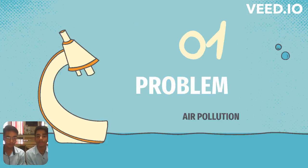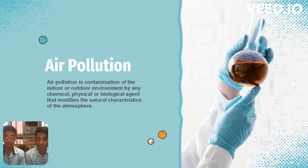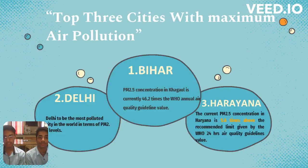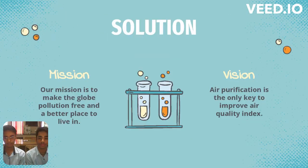As my partner already told you about the societal problem, air pollution nowadays has become a major concern. Air pollution is the contamination of indoor and outdoor environments by a chemical, physical, or biological agent that modifies the natural characteristics of the atmosphere. Let us see the three most polluted states. First is Bihar, second is Delhi, and third is Haryana. Haryana is included due to crop burning and waste burning.